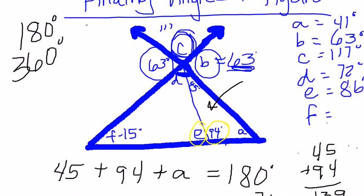Now our very last one, I'm going to find F. The sum of interior angles in a triangle is 180, so I'm now looking at this triangle right here. That means D plus F minus 15 plus E all have to equal 180 degrees. Well, I know D is 72 and E is 86.